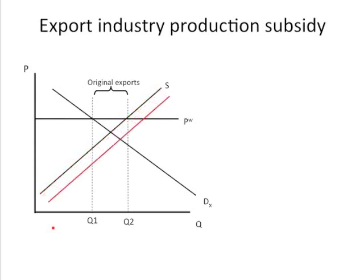In essence, what that does is shift the supply curve down. The supply curve reflects marginal cost. If the domestic government reduces the marginal cost through the provision of the subsidy, firms will produce more. So at the same world price, you will see an increase in domestic production to Q4. Let's imagine that that's the same level of increase in production that we got with the export subsidy — exactly the same amount of increase in domestic activity by firms.